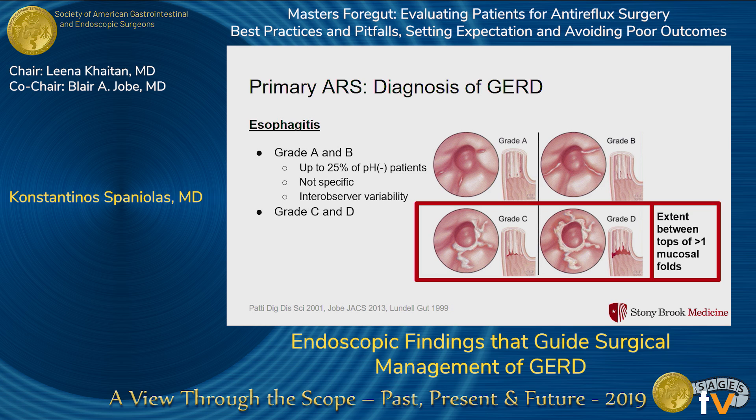Grade A and B esophagitis can be seen in up to 25% of patients with normal esophageal acid exposure, so it's not specific enough to be diagnostic. But the same is not true for the more severe stages, so it's important to make this distinction when assessing someone or reviewing someone else's endoscopic evaluation.